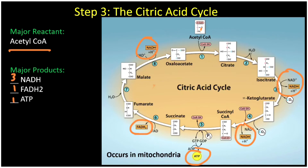How many times can I run the citric acid cycle if I put in one glucose? When I put in one glucose, I get out two pyruvates and eventually two acetyl-CoAs. So this whole cycle can be run two times for every single glucose molecule you put in. That'll be important when we calculate how much ATP, NADH, and FADH you ultimately get out of one molecule of glucose.